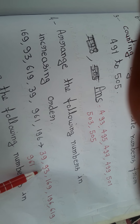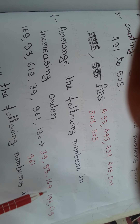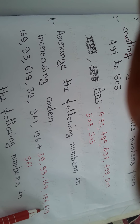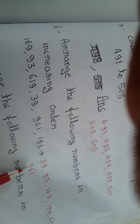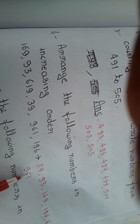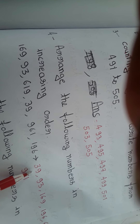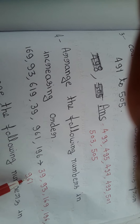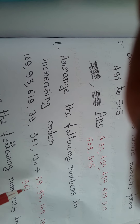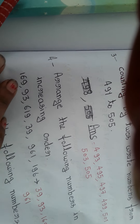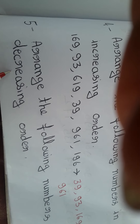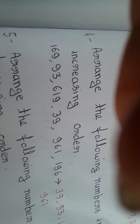We write the smallest number first: 39, 93, 169, 196, 619, 961. From smallest to largest — the last number is the biggest one.